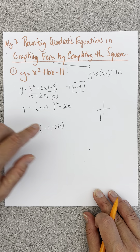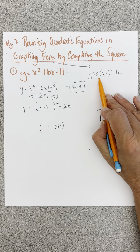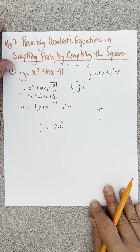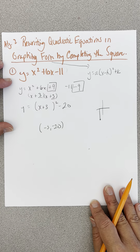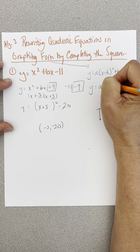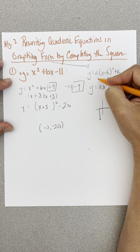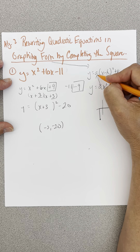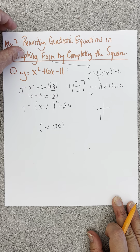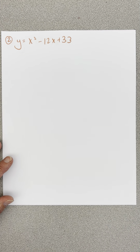The big thing is we want it in graphing form. The a here is just 1, because there's nothing there — the other form we had, standard form, was ax squared plus bx plus c. The a's in both forms are exactly the same, so if this a was 1, that a is 1 as well.